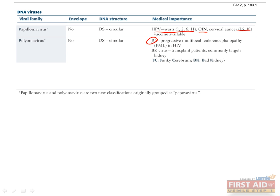JC virus is a polyomavirus named for the initials of the patient who was found to have PML, or progressive multifocal leukoencephalopathy. JC virus is genetically similar to another polyomavirus called BK virus, which causes renal disease in immunocompromised patients and is extremely common in the general population. Most people are asymptomatic carriers of JC virus by the age of 18. JC virus becomes pathological only in immunocompromised individuals, such as those with AIDS, on chemotherapy, or immunosuppressants. Reactivated JC virus causes PML, a demyelinating disease which destroys oligodendrocytes in the CNS and leads to speech, coordination, and memory deficits.